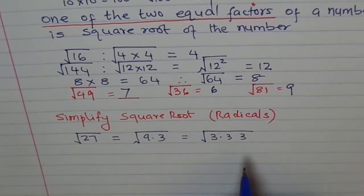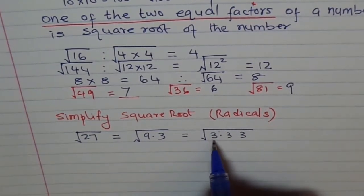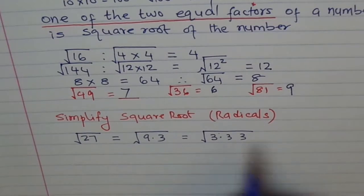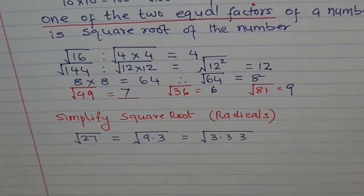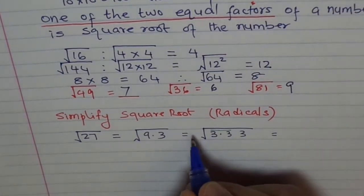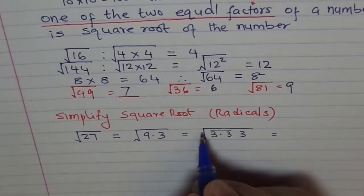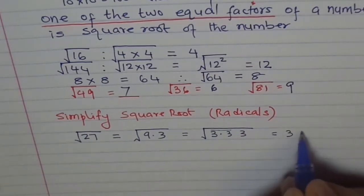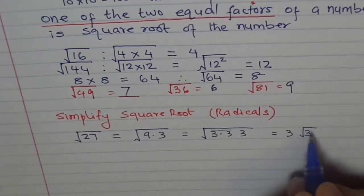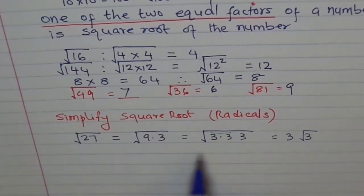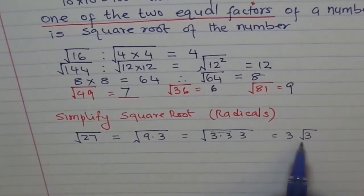Now we just understood that if two same factors are there, then the square root of those two numbers is one of them. So we will combine these two 3's and bring it out of the square root. Square root of 3 times 3 within the square root is the number 3, and we are left with one square root of 3 inside. So square root of 27 can be written as 3 square root of 3.